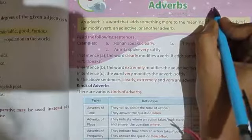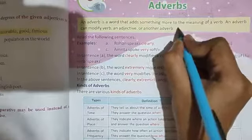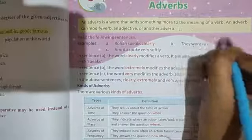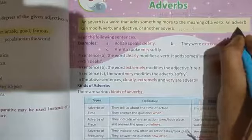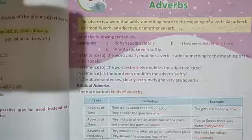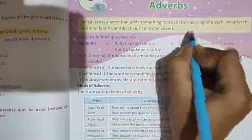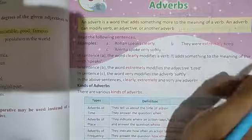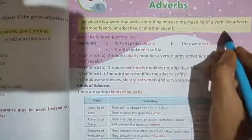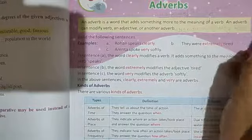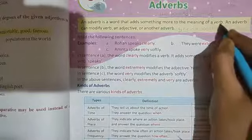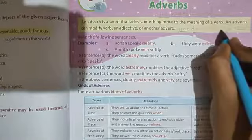Again if I say, for example, her dress is very beautiful. Her dress is very beautiful. Her, again your pronoun, possessive pronoun. Dress is your noun. Is is your verb. Beautiful is your adjective, talking about dress. So what is very? Very is again my adverb.